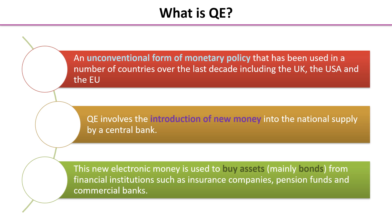The central bank creates electronic money in its tills if you like, and that is used to buy assets, which is mainly bonds from financial institutions such as insurance companies, pension funds and commercial banks. So it's buying back bonds that it previously sold in years gone by.